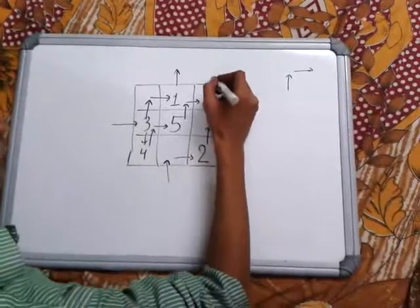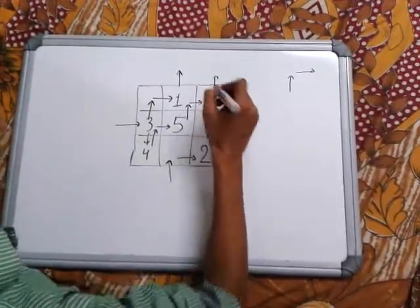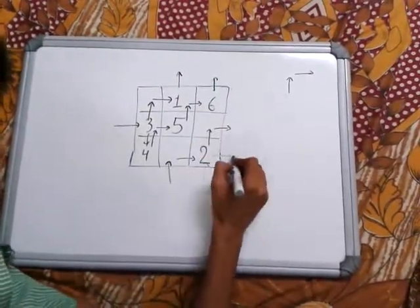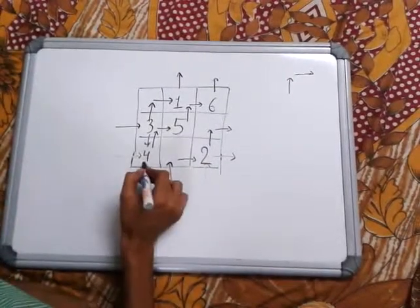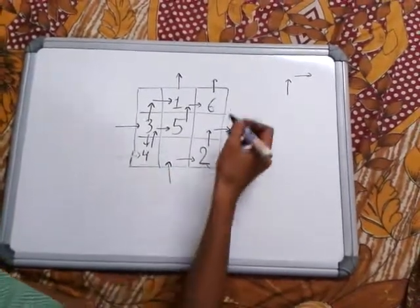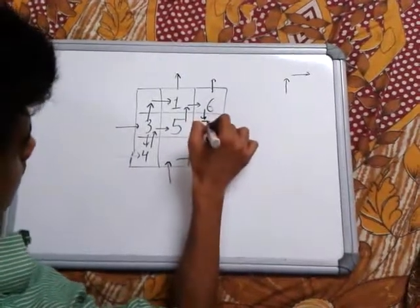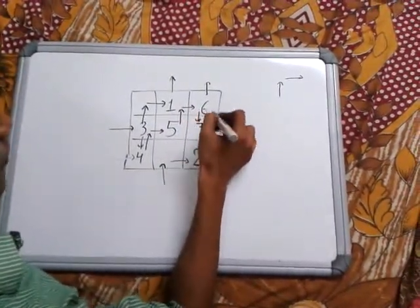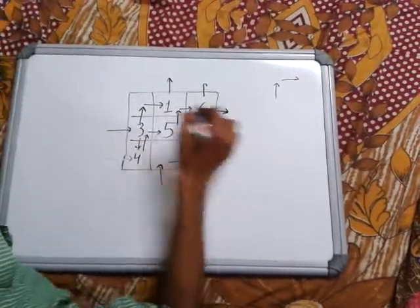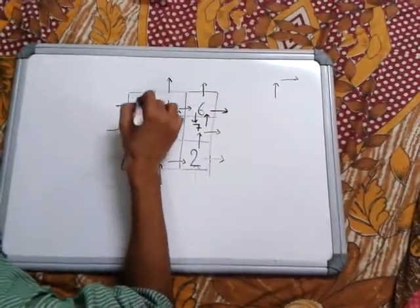Follow the same rule. One up and one right. Because it is already filled, then we have to place the element below the last element. Here. One up. Again, follow the same rule. One up, one right. Place the element here.